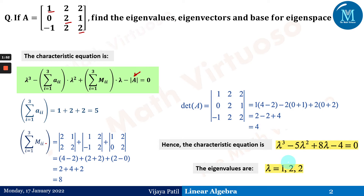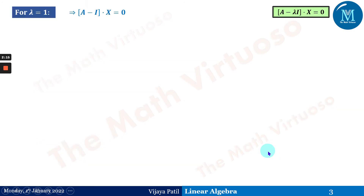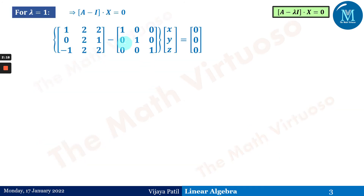You will notice that the eigenvalue 2 is repeated two times, while 1 appears only once. This is what is known as repeated eigenvalues. We are dealing here with how to find an eigenvector corresponding to a repeated eigenvalue. For lambda equals 1, the method remains the same — using Cramer's rule — as we have dealt with in the previous session on distinct eigenvalues.